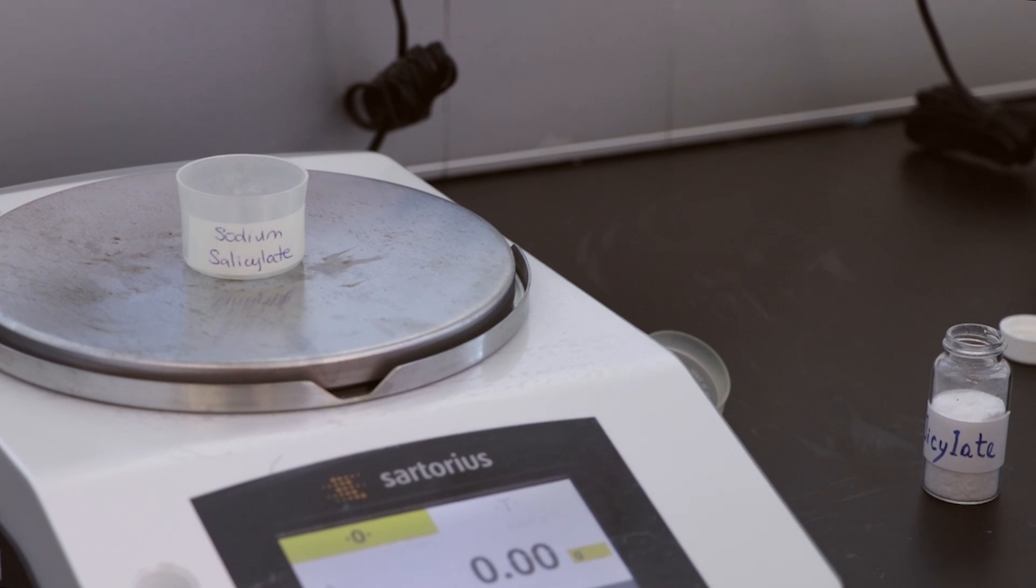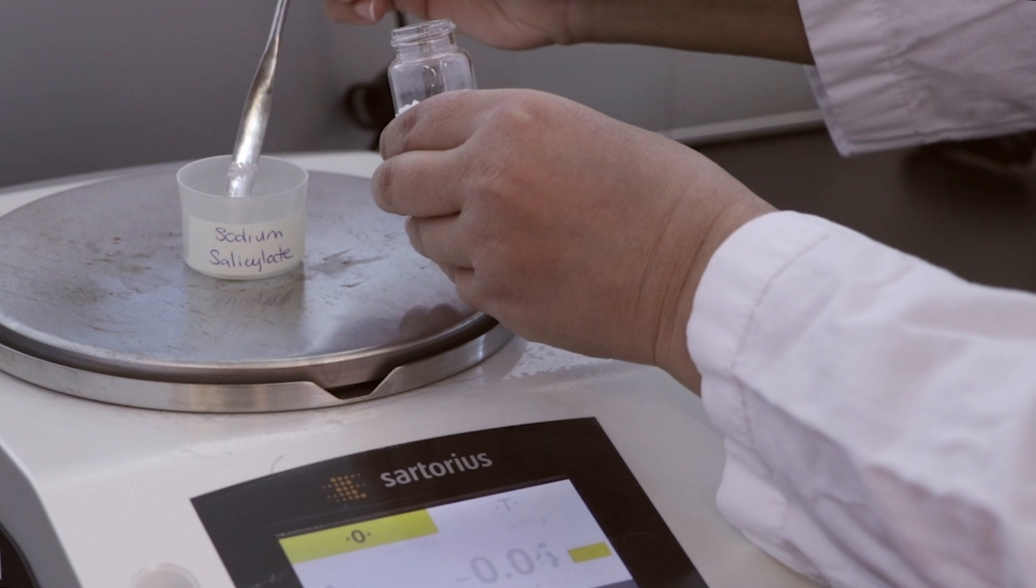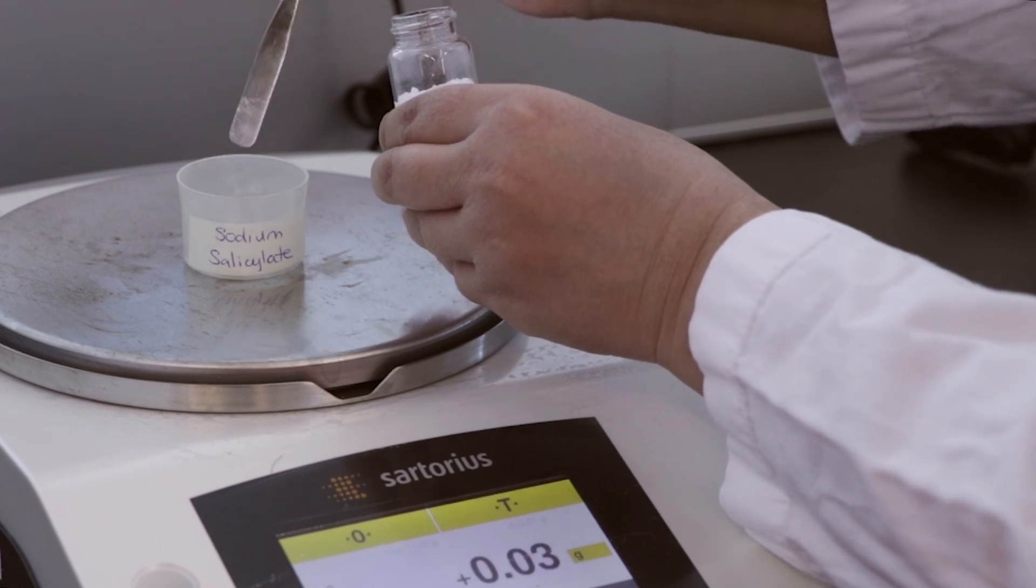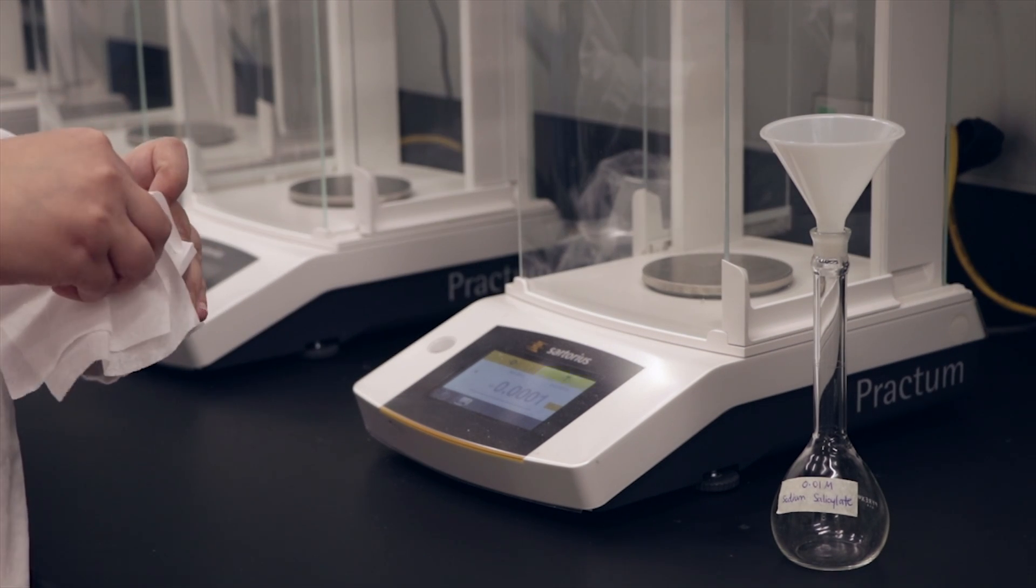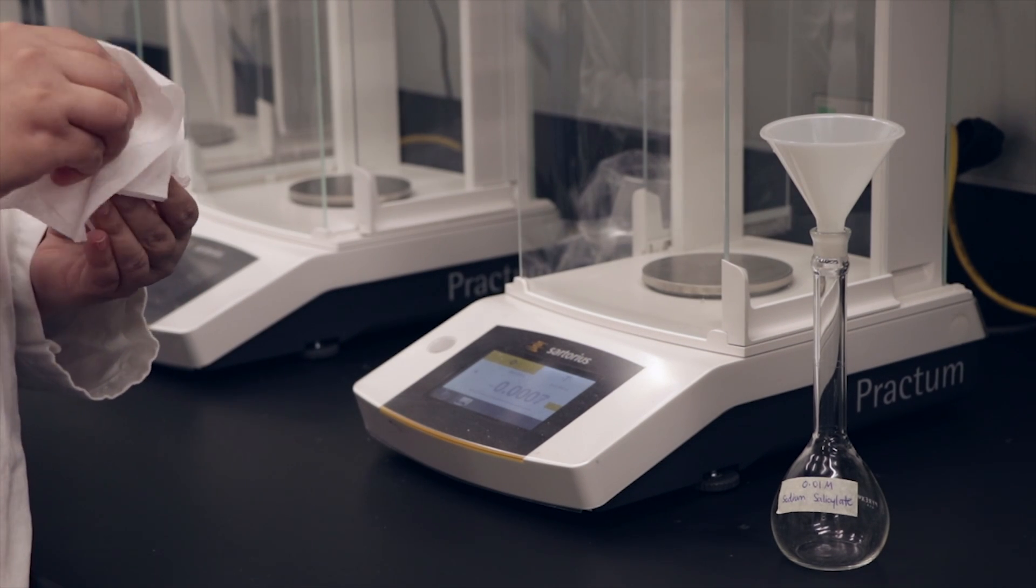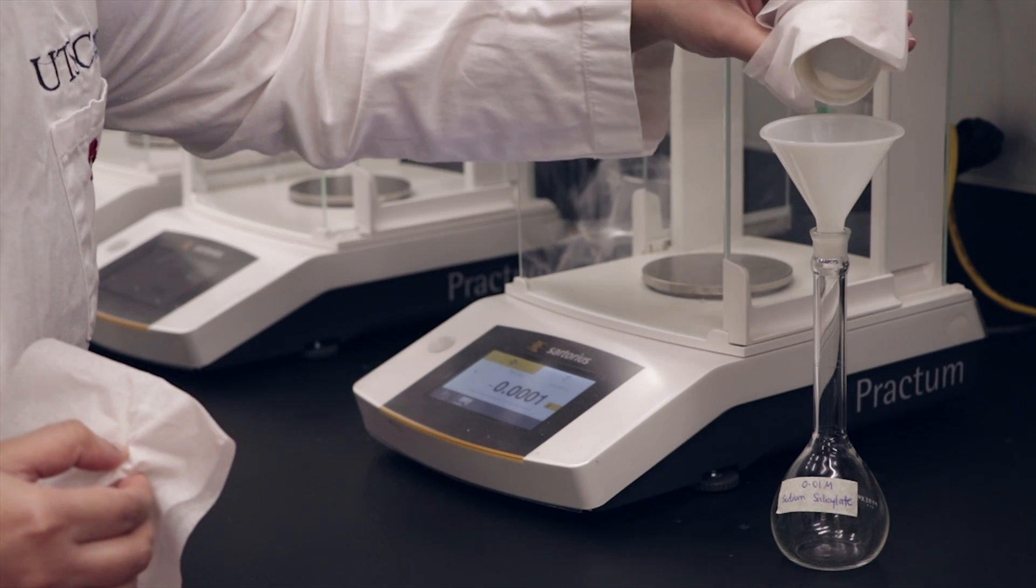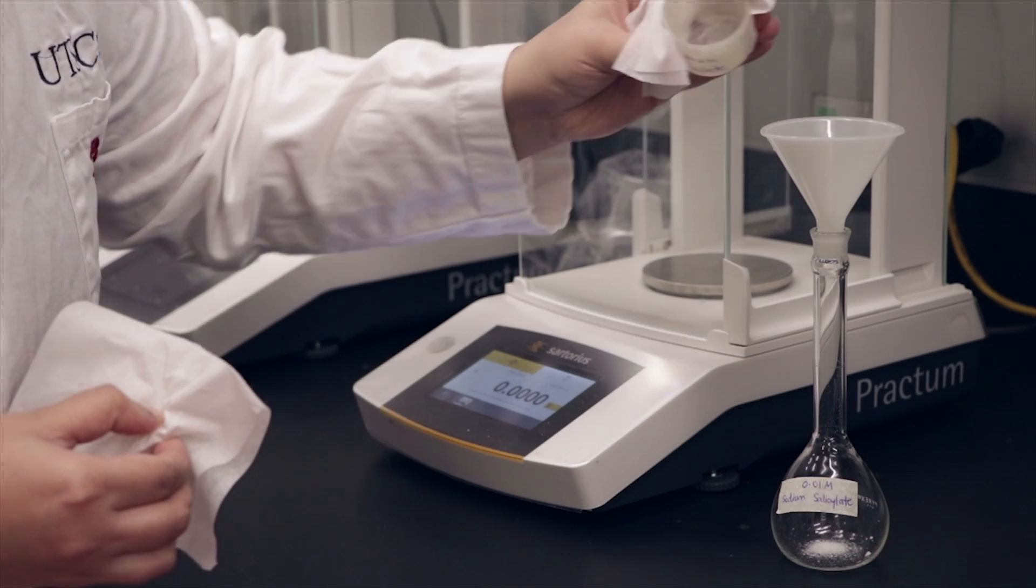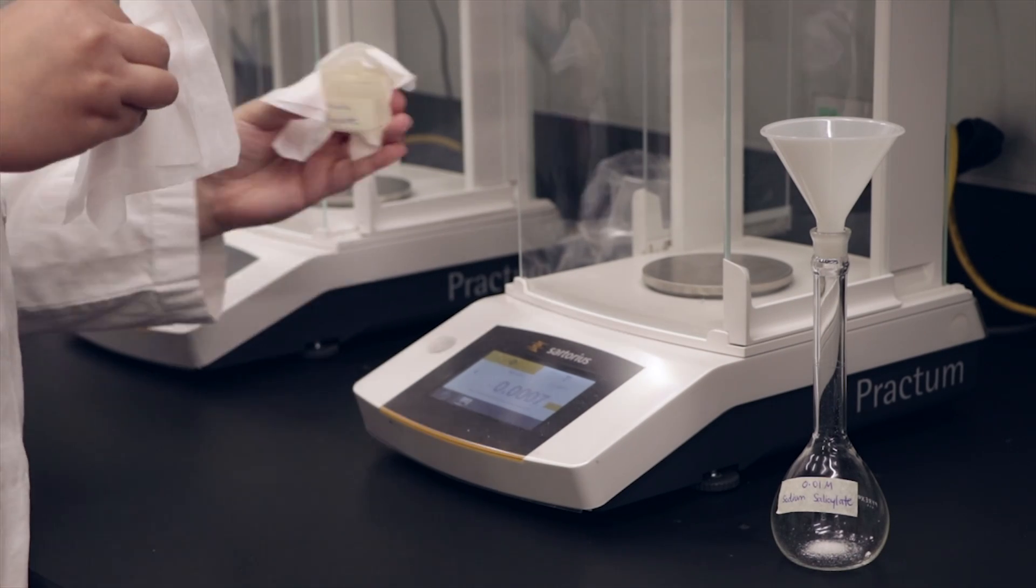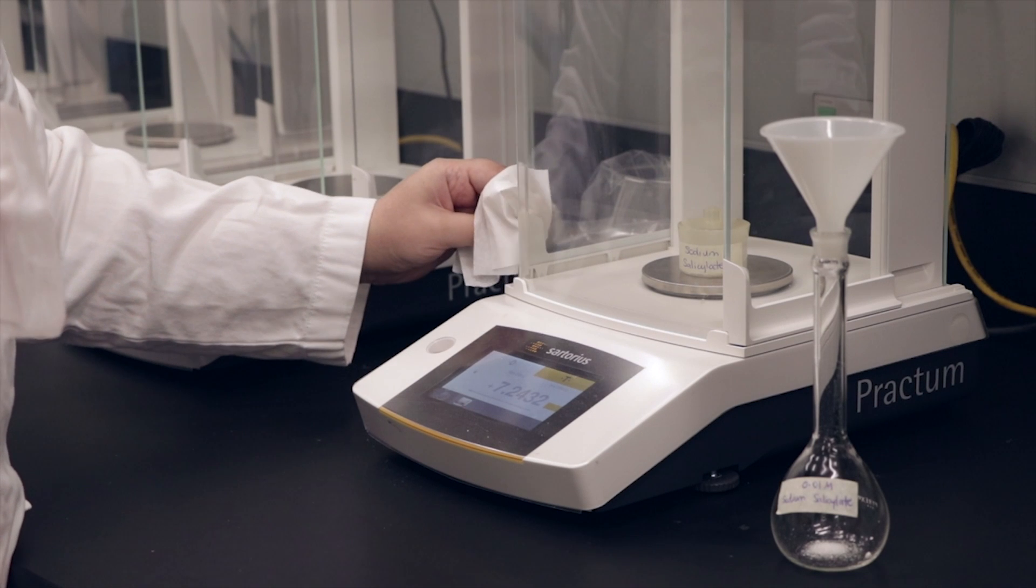Begin by weighing out the appropriate amount of sodium salicylate needed to prepare 100 mils of a 0.01 molar solution. Remember to weigh the sodium salicylate by difference using an analytical balance. After the first reading transfer the salt into a 100 mil volumetric flask and re-weigh the empty bottle using the same balance. Click the link in the description below for a more detailed explanation of weighing by difference and how to fill a volumetric flask.